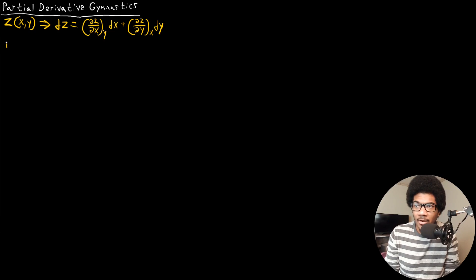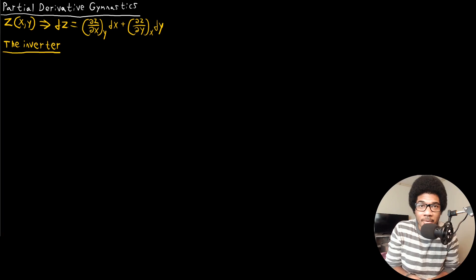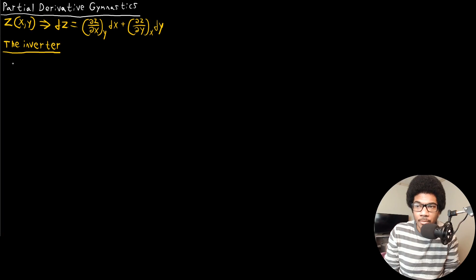The first one I want to look at is called the inverter. I've given each one of these a name — some of these you might not see in official math textbooks, but I think these are really useful titles to help remember these relationships for partial derivatives. I want to go through the derivation of how we attain each one of these expressions rather than just giving them to you.